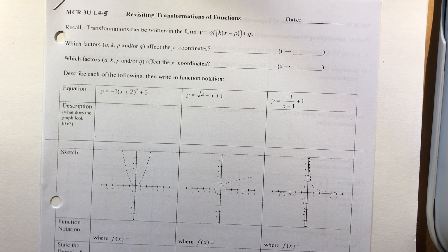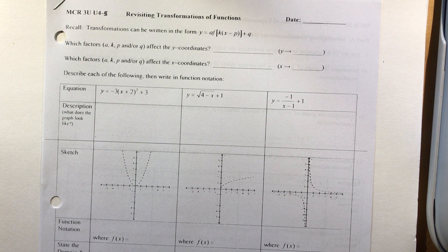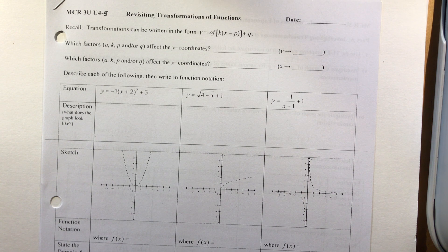Today, before we start graphing exponential functions and transforming them, I thought it would be a really good idea to go back over just the basic transformations — especially if you did it in chapter one and then did quadratics and rationals and maybe you've forgotten a little bit. So transformations of functions: we're going to look at some of the parent functions from chapter one, and then in the next lesson we'll graph exponential functions and transform them.